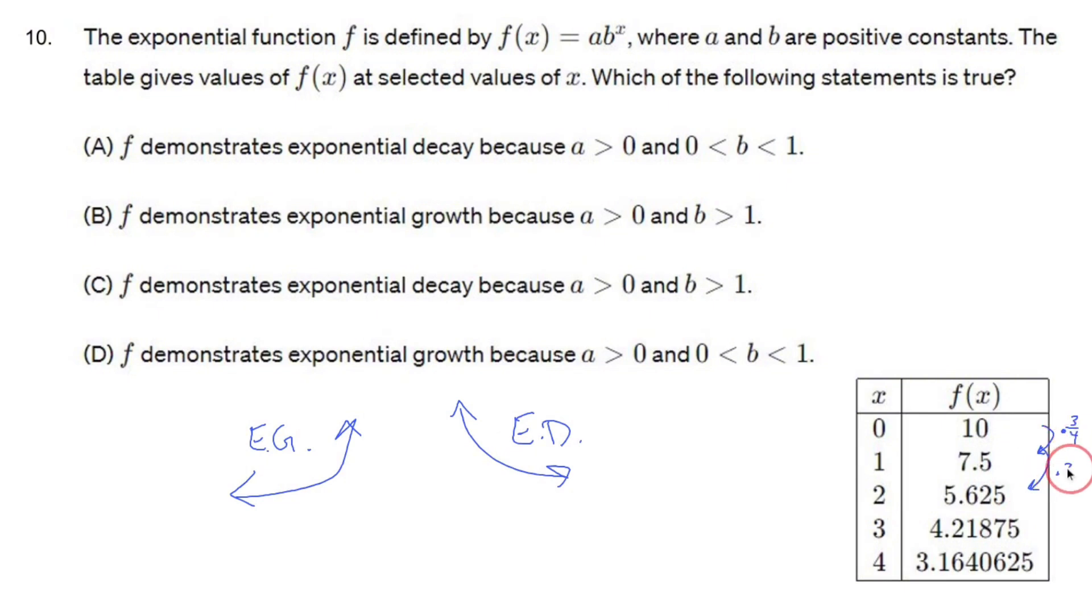And I'm assuming that's multiplying by three quarters again. The math is kind of wonky, but that's going to happen again. That's going to happen again. That's what you do when you have an exponential function.